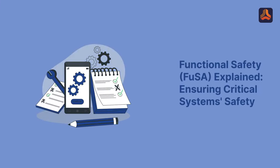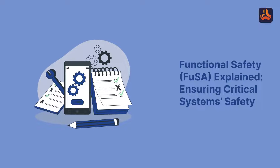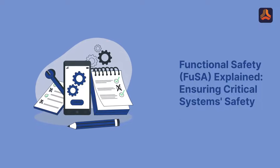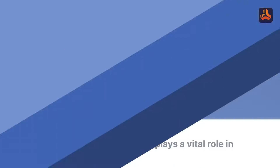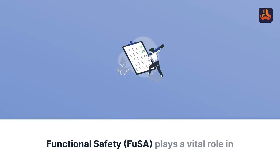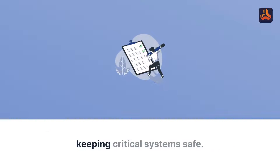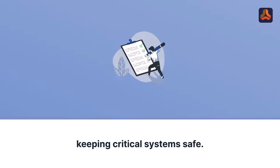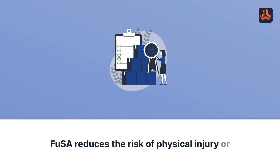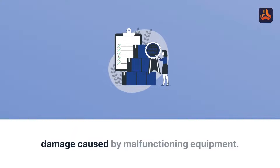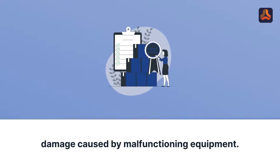Functional Safety, FUSA, Explained: Ensuring Critical Systems Safety. Functional Safety FUSA plays a vital role in keeping critical systems safe. FUSA reduces the risk of physical injury or damage caused by malfunctioning equipment.